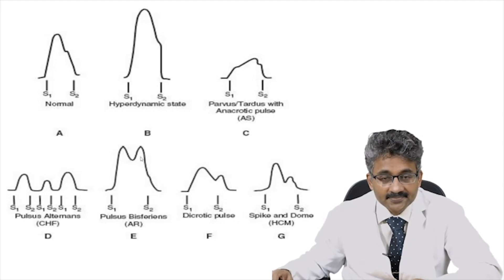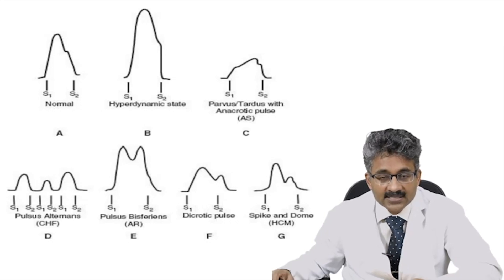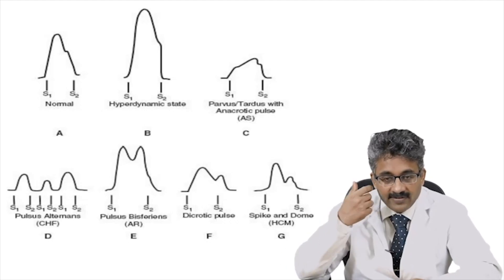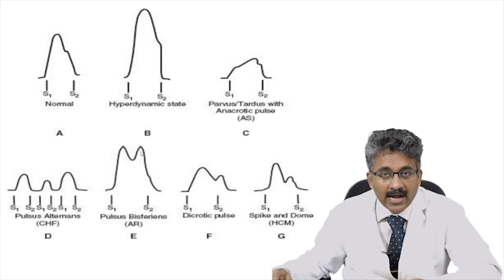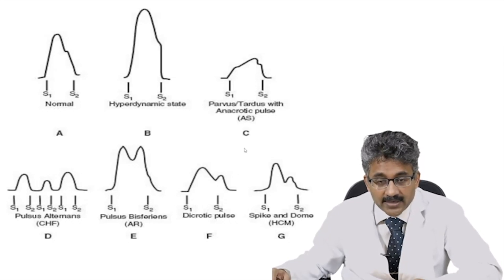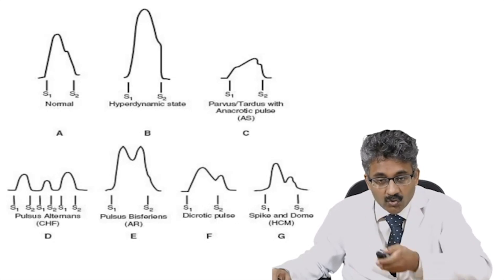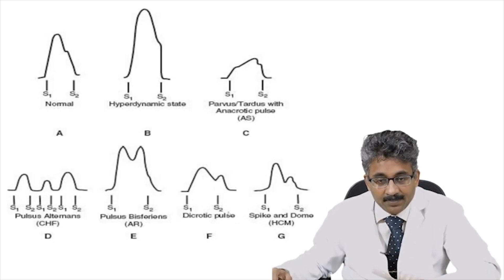Unilateral bisferiens pulse may be seen in aortic dissection. The dicrotic pulse has one peak in systole and one peak in diastole. Dicrotic pulse is seen in sepsis, intra-aortic balloon counterpulsation, typhoid fever, dilated cardiomyopathy, left heart failure, and cardiac tamponade.